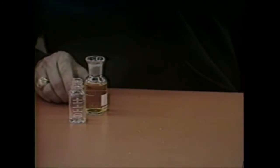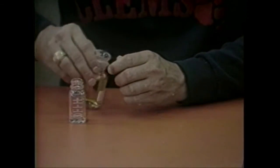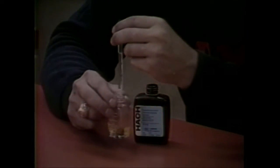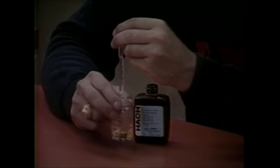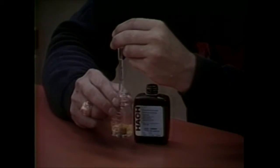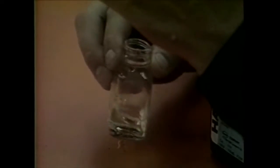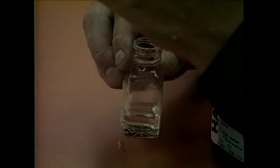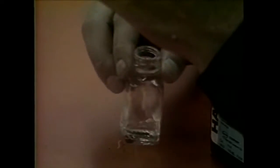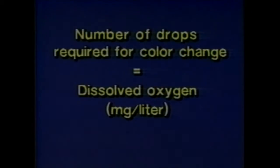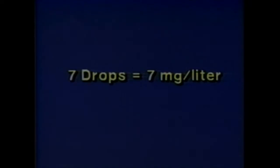Rinse the plastic measuring tube with the sample, then fill and pour the contents into the mixing bottle. Add PAO standard solution drop by drop to the contents of the mixing bottle. Swirl the mixture after adding each drop while dispensing the drops with the dropper directly above and vertical to the mixing bottle. Add until the color changes from yellow to colorless. Be sure to count the number of drops while adding them. The number of drops required to change the sample from yellow to colorless is equal to the dissolved oxygen concentration in milligrams per liter. For example, if it took seven drops for the color to change, then the sample contains seven milligrams per liter or parts per million of dissolved oxygen.